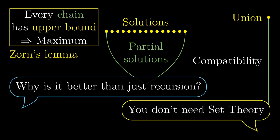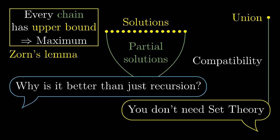However, Zorn's lemma is handy for people who don't want to study the details of set theory. To state Zorn's lemma, it is sufficient to explain partial orderings and chains. You don't have to explain well-orderings, transfinite recursion, ordinal numbers, or the difference between a set and a class.